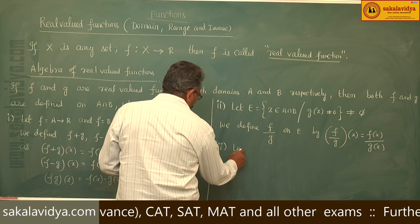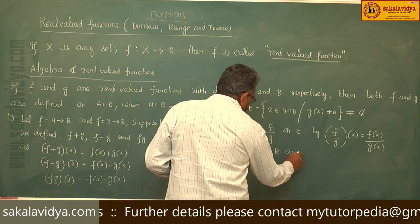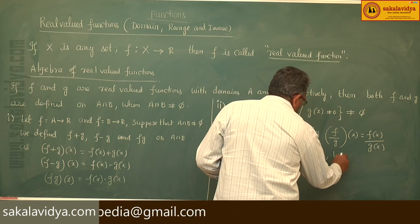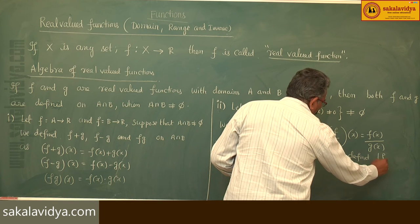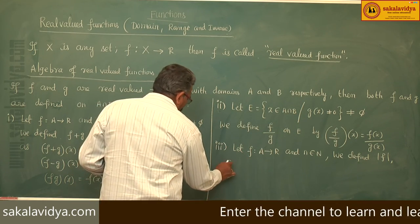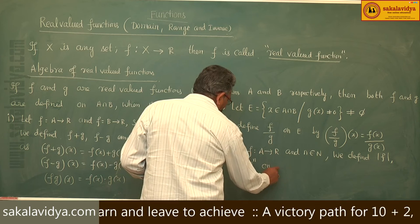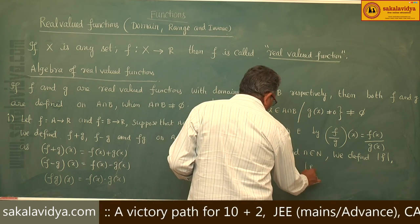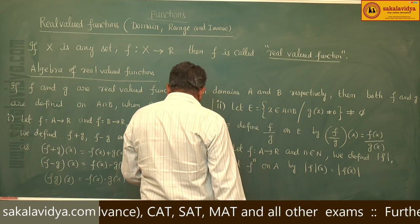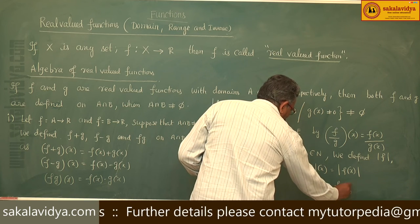Third: let f map A to R and let n belong to the set of natural numbers. We define the modulus of f and f to the power n on A by: |f|(x) = |f(x)|, and f^n(x) = [f(x)]^n.